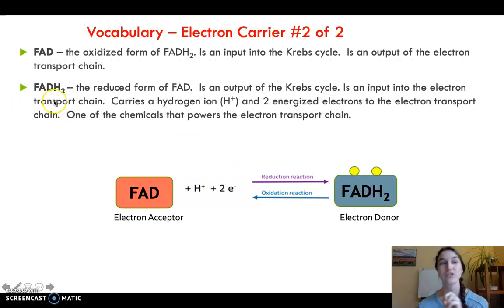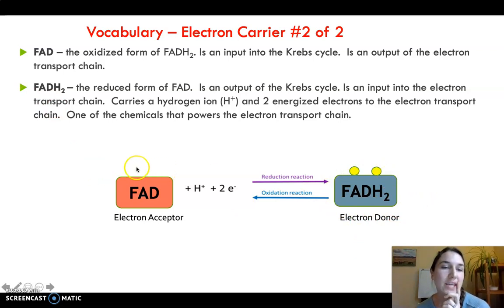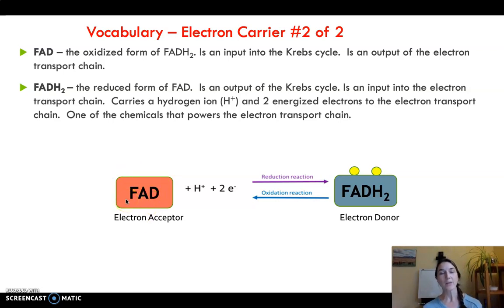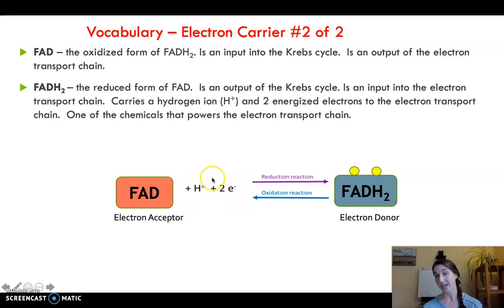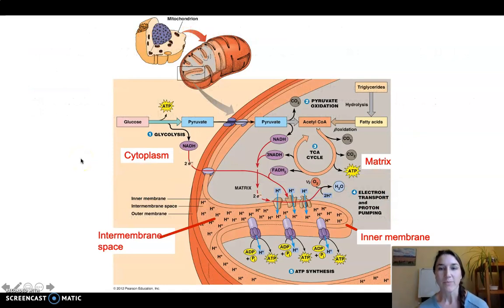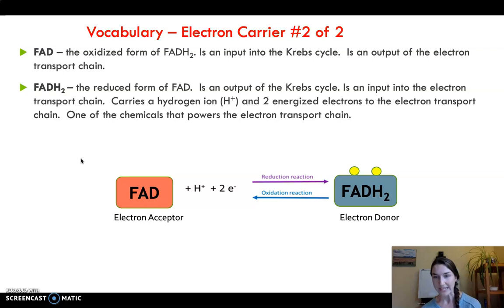Let's look at our second electron carrier, FADH2. It works the exact same way. The oxidized version of FADH2 is FAD — again, an abbreviation for a larger, more complex molecule. FAD feeds into the Krebs cycle where it picks up electrons from carbon, getting reduced by electrons and a hydrogen ion to become FADH2. Then FADH2 heads to the electron transport chain, drops off its electrons, and gets converted back to FAD, which can return to the Krebs cycle to get reloaded again. In my next video, we're going to start getting into the details of this process.